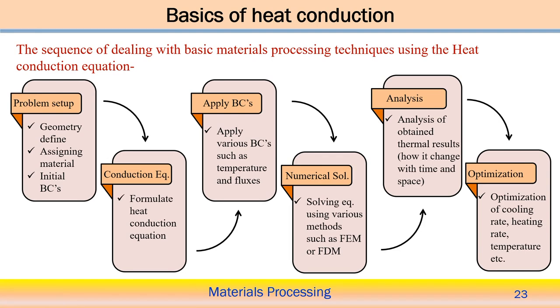First, we need to define the problem setup: define the geometry, fix the solution domain for which we are looking for the temperature distribution by solving the heat conduction equation. Then define the material — whether we are handling aluminum alloy, nickel alloy, or steel — and assign the thermal properties: thermal conductivity, specific heat, and density. These properties are important for the heat transfer analysis, and if we change the material, all these properties will be different.